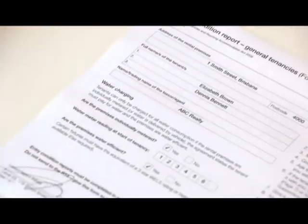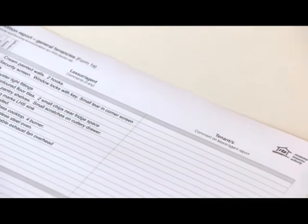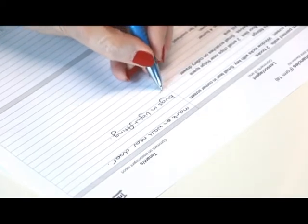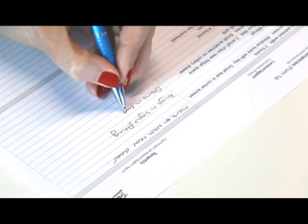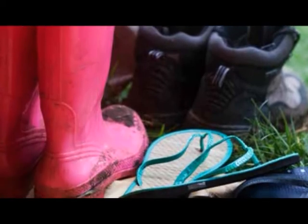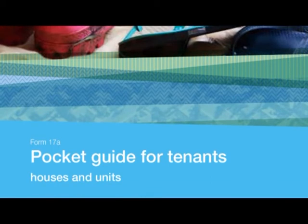There are other very important documents required at the start of a tenancy, and these include the Entry Condition Report. This report shows any pre-existing damage, what the condition of the property is, whether it's clean, undamaged and whether the items are working. You should also receive a copy of the Form 17A information statement — it's a pocket guide for tenants. This outlines the rights and responsibilities for you as a tenant and where to go for more information. Remember, both parties involved in a tenancy have rights and responsibilities, whether you are the landlord or the tenant.